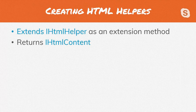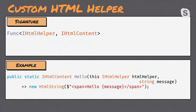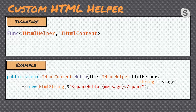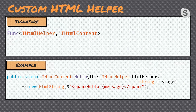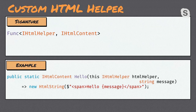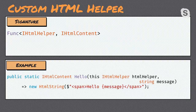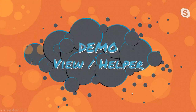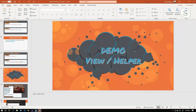Creating HTML helpers is fairly simple — we just need to extend IHtmlHelper as an extension method and return IHtmlContent. Looking at the function signature: we take in IHtmlHelper, output IHtmlContent, and here's an example of a Hello helper that writes out a span with a message inside. Let's break away and do a quick demo to view that HTML helper in Visual Studio.